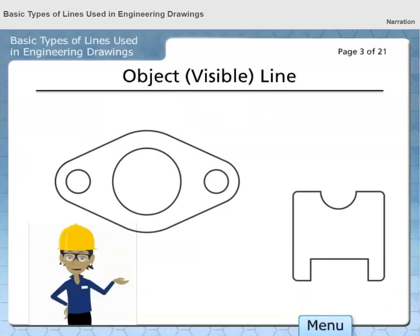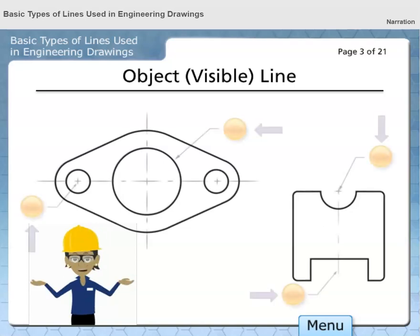Object or visible lines are used to represent the outline or contour of the object being drawn. These lines appear as thick, continuous lines. Select the button that best represents an object line.